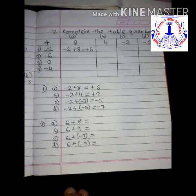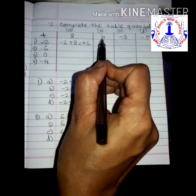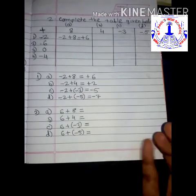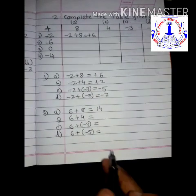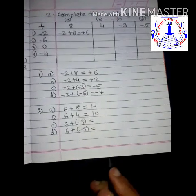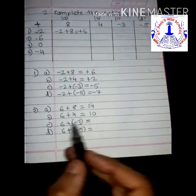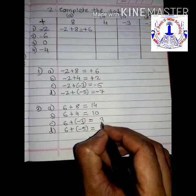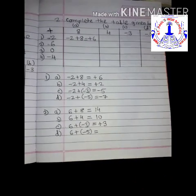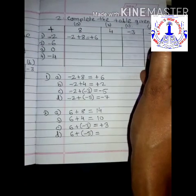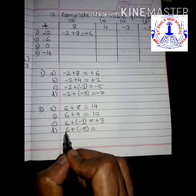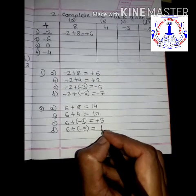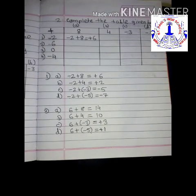Now the second row: number 6. Add 8, 4, minus 3, and minus 5 to 6. 6 plus 8 is 14. 6 plus 4 is 10 — simple addition. Then 6 plus minus 3: one positive, one negative, so subtract the smaller from the bigger; 6 minus 3 is 3, and the sign of the bigger number (6) is plus, so the answer is positive 3. Finally, 6 plus minus 5: 6 minus 5 is 1, and 6 has a plus sign, so the answer is positive 1.